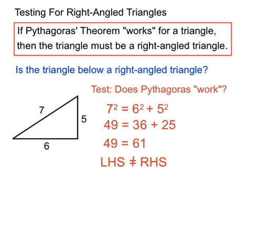So that indicates that Pythagoras has not worked for those numbers, and therefore we have found out that that triangle is not a right angled triangle.